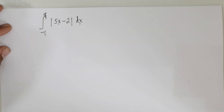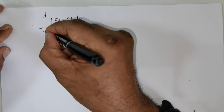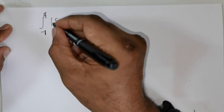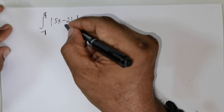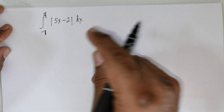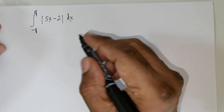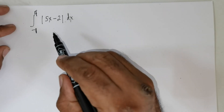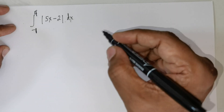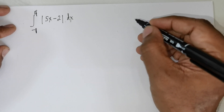Good day students. I am going to explain to you how to integrate the definite integral from negative 1 to 4 of the modulus of 5x minus 2 dx. This is a very important question and this integration is not done the same way as other integrals.